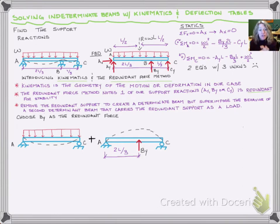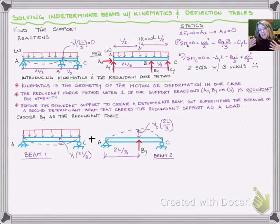The original beam wants to sag down or smile. We'll call that beam one, and the new beam, beam two, also wants to smile. Now we can mark their displacements at 2L over 3 where B occurs. Going back to our original beam, we see at 2L over 3, that displacement should be zero.